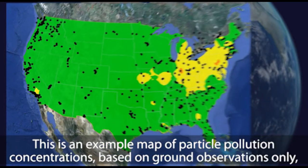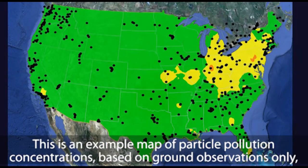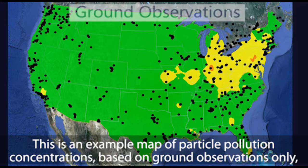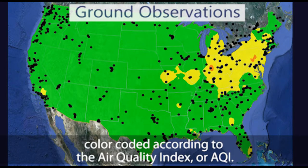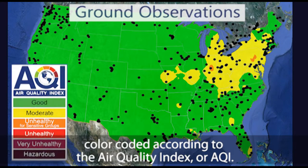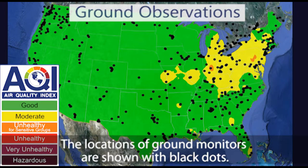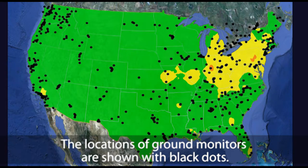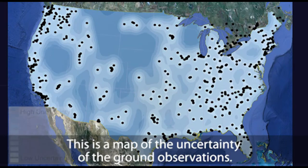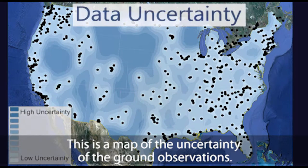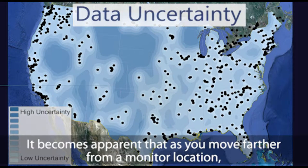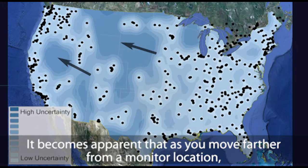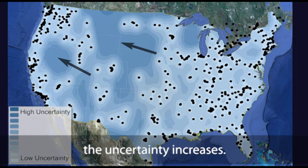This is an example map of particle pollution concentrations based on ground observations only, color-coded according to the Air Quality Index, or AQI. The locations of ground monitors are shown with black dots. This is a map of the uncertainty of the ground observations. It becomes apparent that as you move farther from a monitor location, the uncertainty increases.